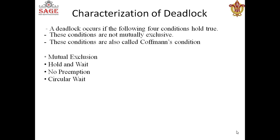Basically there are four conditions of deadlock: number one, mutual exclusion; number two, hold and wait; number three, no preemption; number four, circular wait. For a deadlock to occur, all four conditions should be present — only then can we say there is a deadlock in the system.